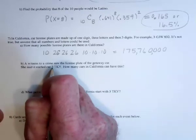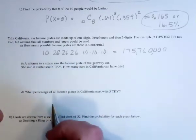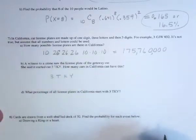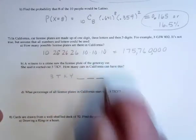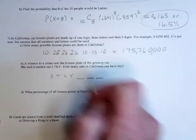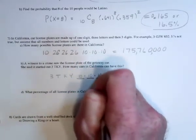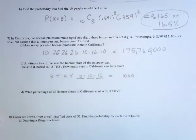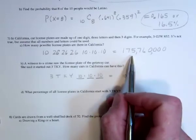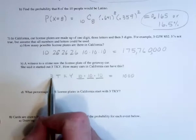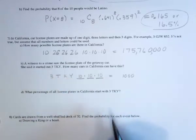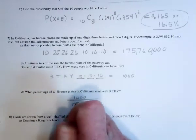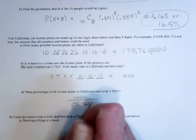With this license plate it starts with a 3 and then TKY. So we know the 3 and the T, K, and Y are taken care of, but then these last three aren't known. Since they're digits, it's 10 possibilities for each, so 10 times 10 times 10 would be a thousand. So out of all these 175 million, there would be a thousand of them that start 3TKY.